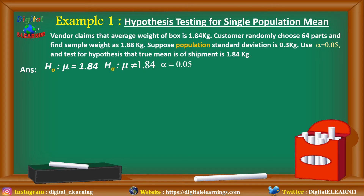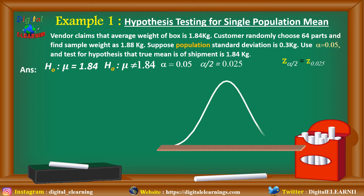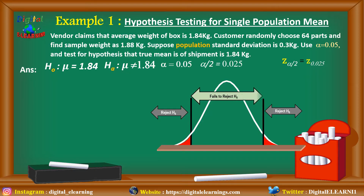We have alpha equal to 0.05, so dividing by 2 we get 0.025. Now we need to calculate the Z critical value, that is Z alpha by 2, which is Z 0.025. We plot this in a normal distribution curve and define our rejection areas. Anything falling outside these areas will be rejected — that is, we reject the null hypothesis. If it falls in the middle region, we fail to reject the null hypothesis.